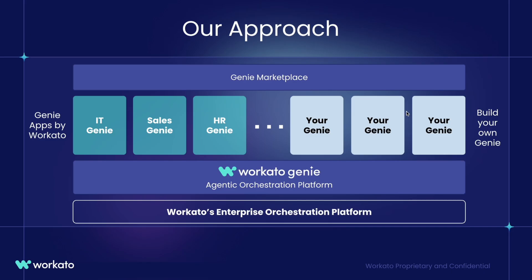Our approach is as follows: Workado Genie is the platform for you to build your own AI agents — your own Genies — to deploy in your company. On top of that, we ourselves are going to release some very specific prepackaged applications: IT Genie for IT help desk, Sales Genie to act as a sales assistant, and HR Genie to orchestrate various HR processes including HR help desk. And eventually, from a roadmap standpoint, we'll have a marketplace for you to get all of these Genies.